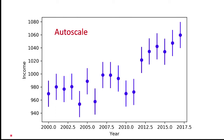A common issue when generating graphs is scaling. If you use a computer program like Matplotlib on Python or Excel, the default is normally for your graph to be auto-scaled. What this means is the software will work out roughly the range in X and Y and pick a graph and axes that cover it more or less, with a bit of spare room around the side — it's what it's done here.